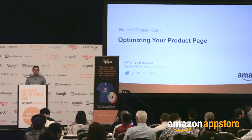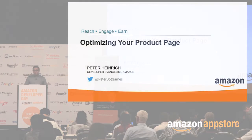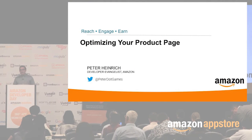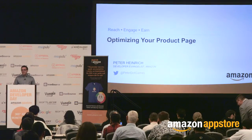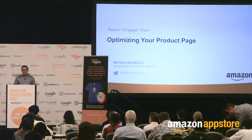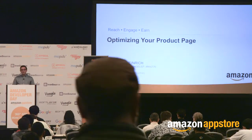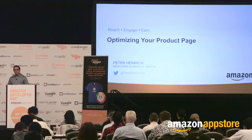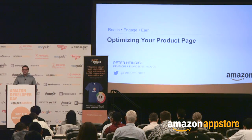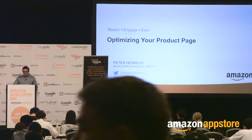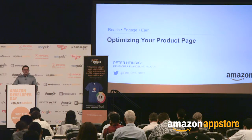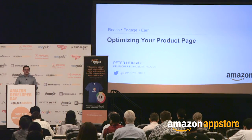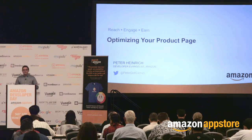My name is Peter Heinrich. I am a developer evangelist with Amazon, which is a slightly goofy title that means my job is actually to make mobile app and game developers as successful as they can be, and that includes on our app store. Amazon has an app store that's based on Android, available on all of our Kindle devices and other hardware.